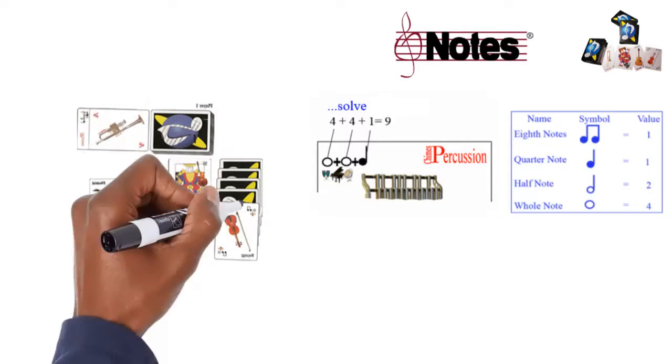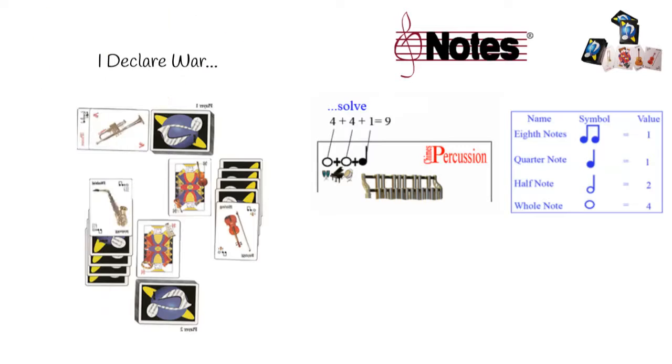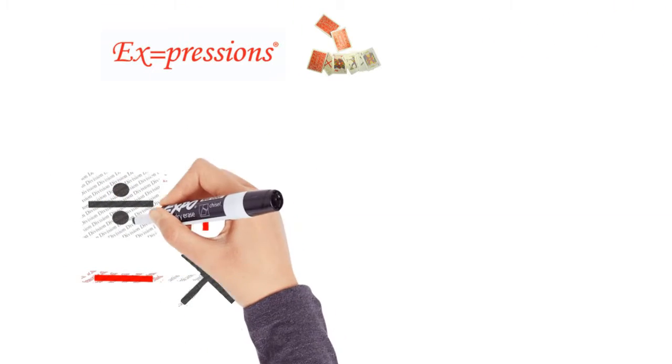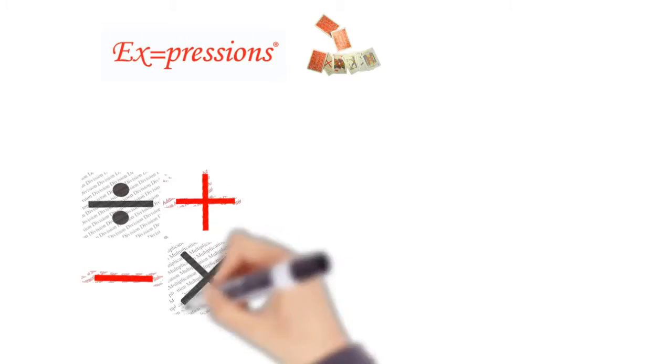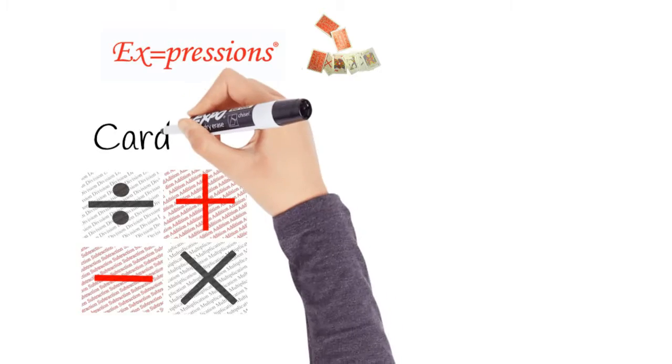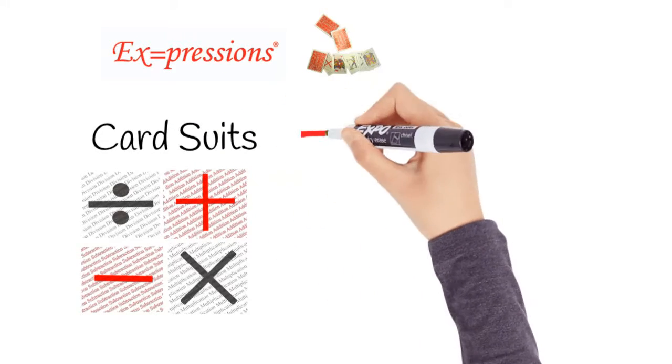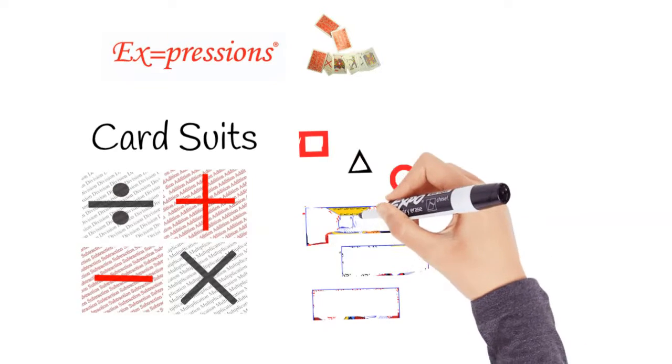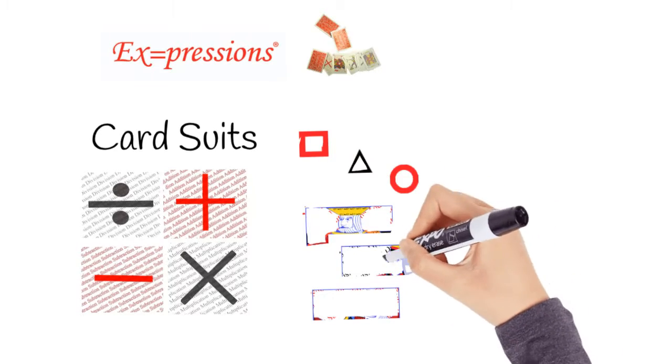Here are a few features of the cards. Expressions replaces the diamonds, hearts, clubs, and spades with division, multiplication, addition, and subtraction as its four suits. The kings, queens, and jacks can be identified by corresponding pictures and the shapes: square, triangle, and circle.